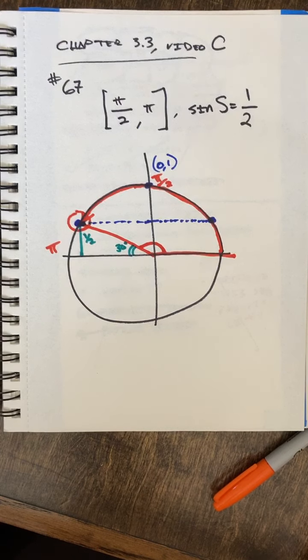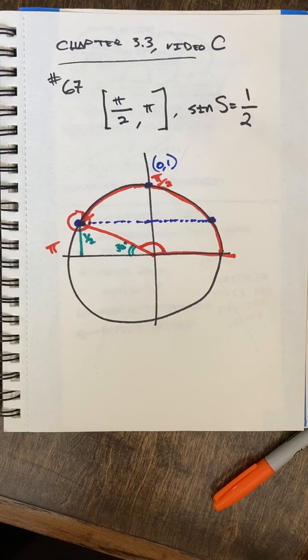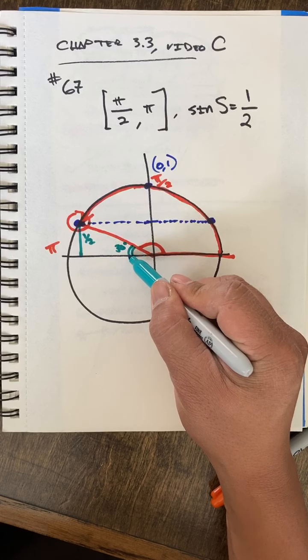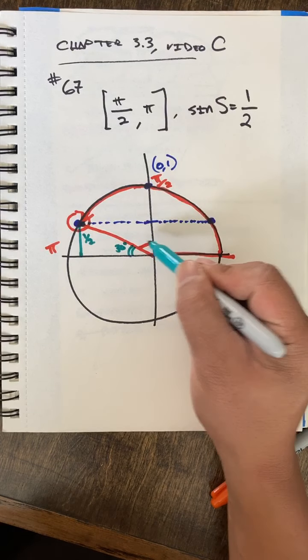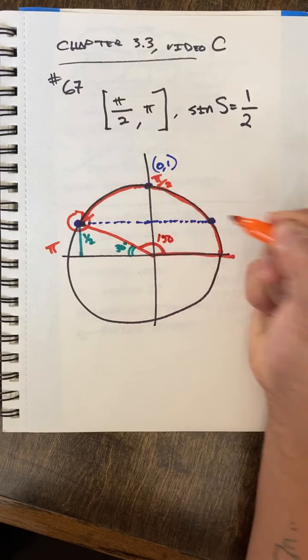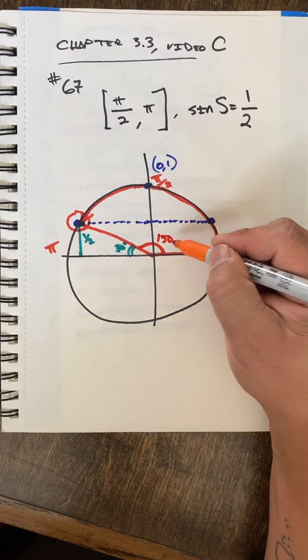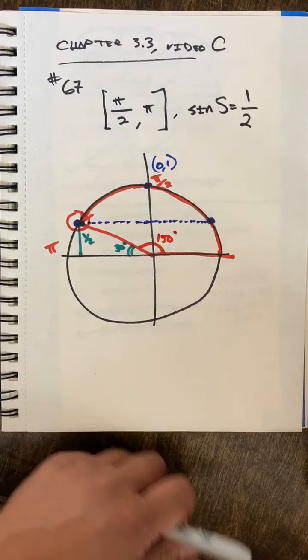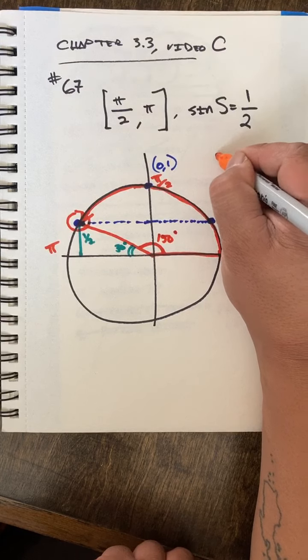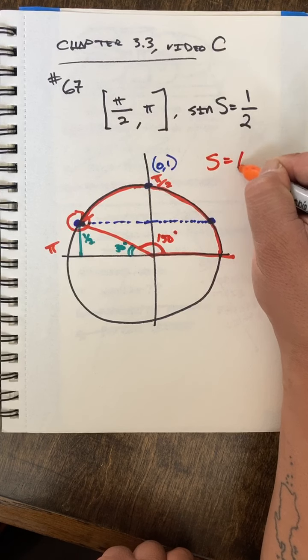A 30 degree angle here. Now the whole half circle is 180, that means this orange angle must be 150. It is supplementary to the 30 degree angle. So my answer for this is s equals 150 degrees,